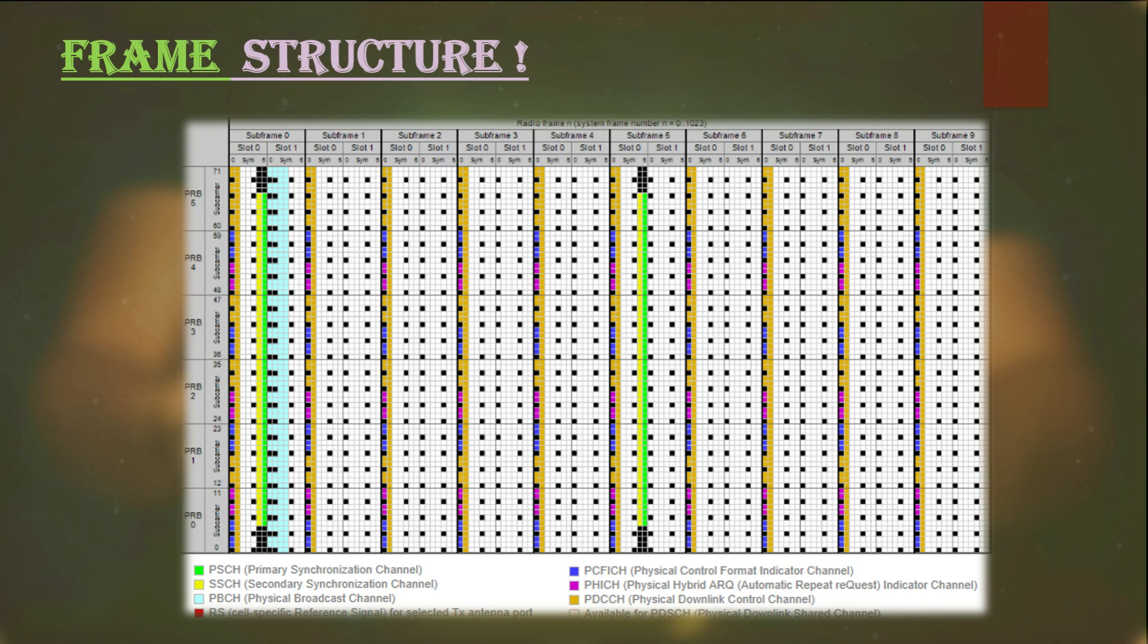There are more channels too, for sync like DMRS—Demodulation Reference Signal—which is used to have the estimate of the other channels like PBCH, PDSCH, PDCCH. Another is CSI-RS—Channel State Information Reference Signal—which is used for CQI calculations, precoding matrix, rank indicator information, link adaptation information, etc.